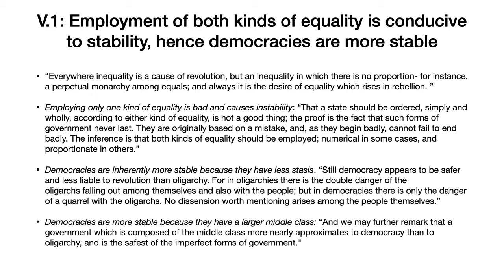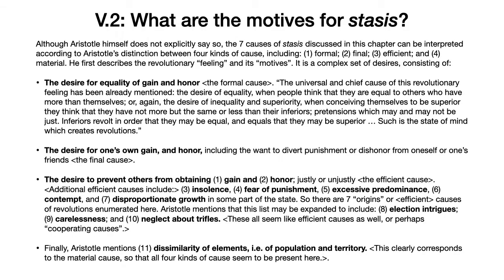In chapter two, Aristotle discusses the motives and causes of stasis. Although he doesn't explicitly say so, the seven causes of stasis he discusses can be interpreted according to his distinction between four kinds of cause: the formal cause, the final cause, the efficient cause, and the material cause — and we can map them onto the various motives and causes of stasis he discusses. He first describes the actual emotional feeling of the revolutionaries — those propagating factionalism, party politics, or revolution — and the cognitive dimension of the emotions they're feeling.